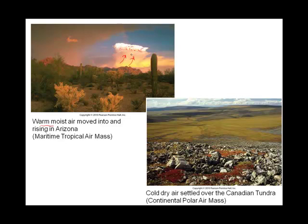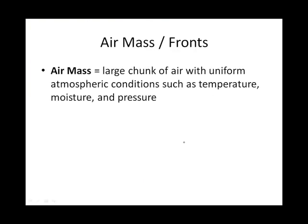Switching gears, think north — think Canada, inland, so it's dry. This is a cold, dry air mass that is just hanging out over Canada. So an air mass is a big chunk of air and it has uniform conditions. The most notable things we measure as uniform with an air mass are its general temperature — hot or cold — and its general moisture: moist, meaning lots of water, or dry, the absence of water.